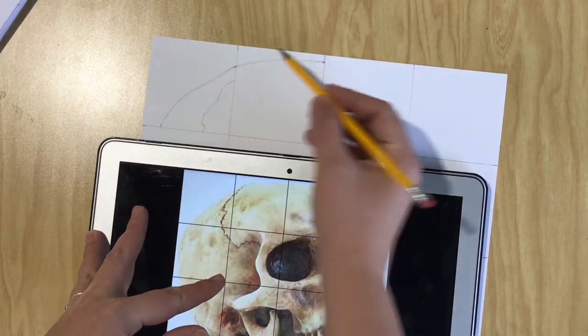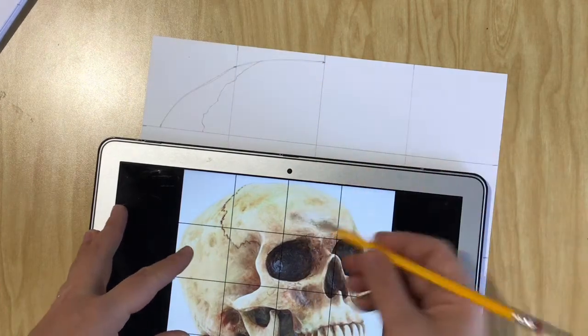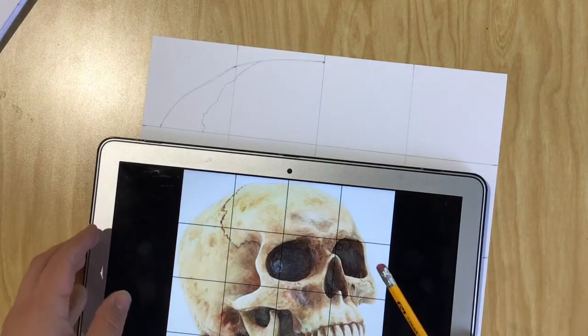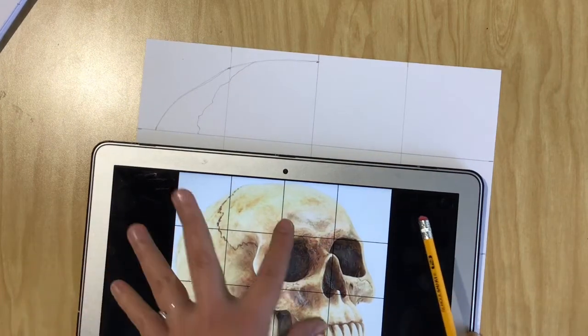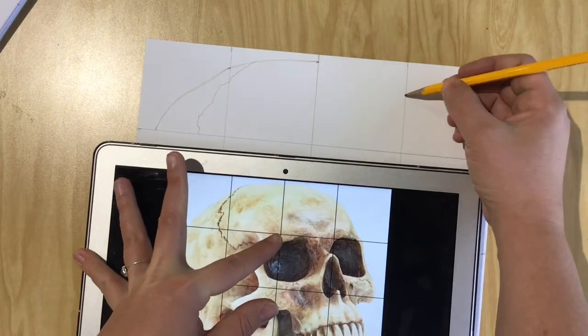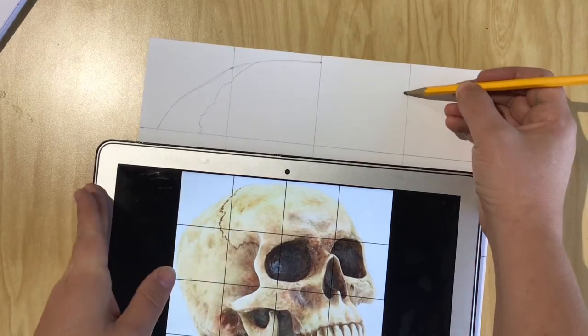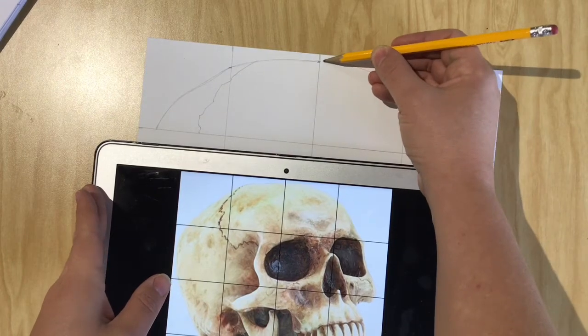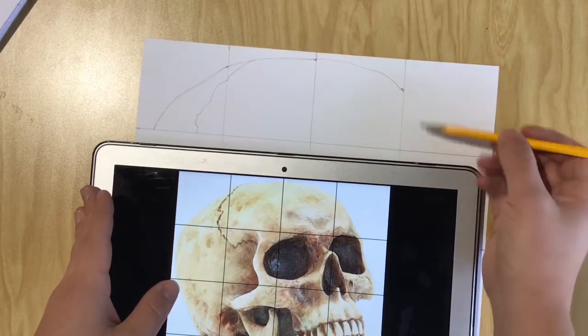So the nice thing about grid drawing is that you don't have to worry about drawing the whole image, which is why I wanted you to choose something that you've always wanted to learn how to draw. Because grid drawing is such a good step-by-step on drawing something. Because you don't have to worry about drawing the whole thing.